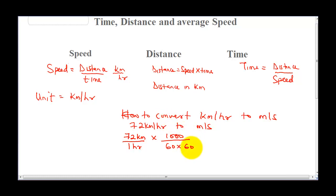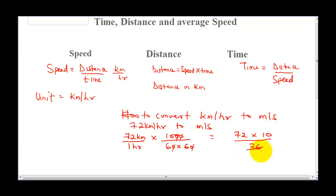Canceling the zeros: we get 72 times 10 over 6 times 6, which is 36. Then 36 and 72 gives us 2, so we have 20 over 1, which is 20 meters per second. So 72 km/h equals 20 meters per second. That is exactly how you convert kilometers per hour to meters per second.